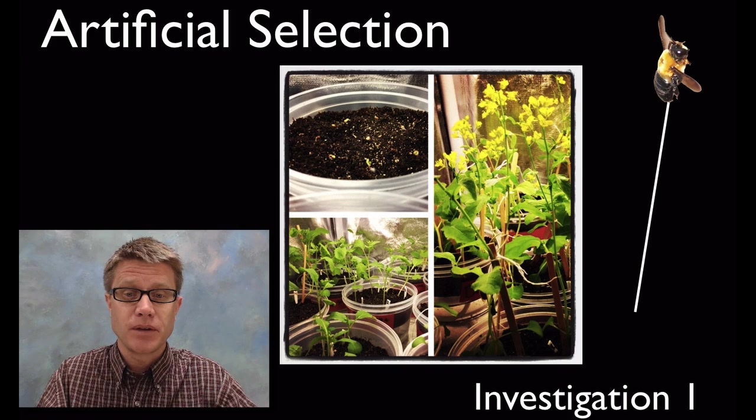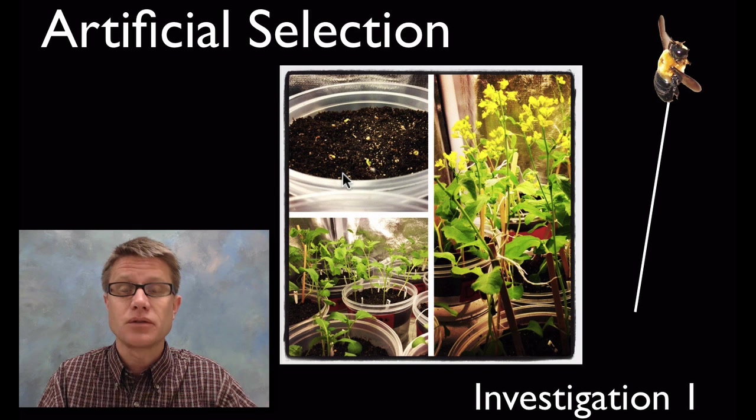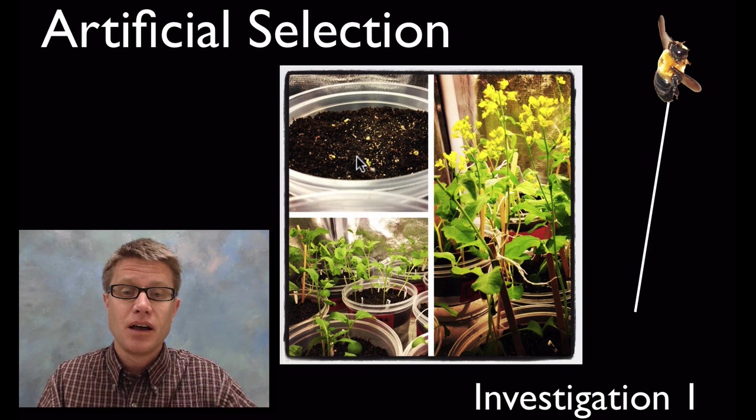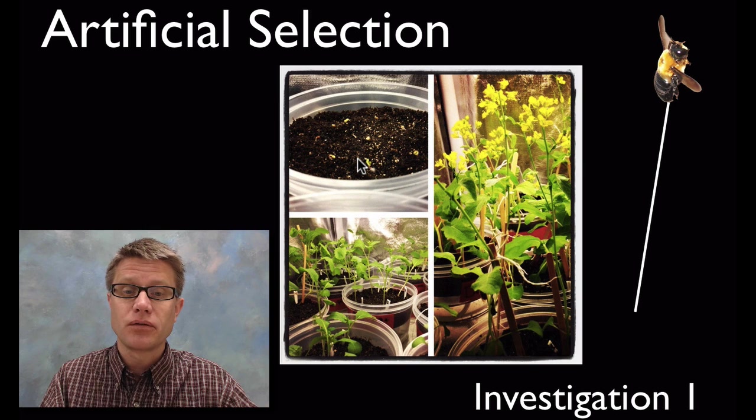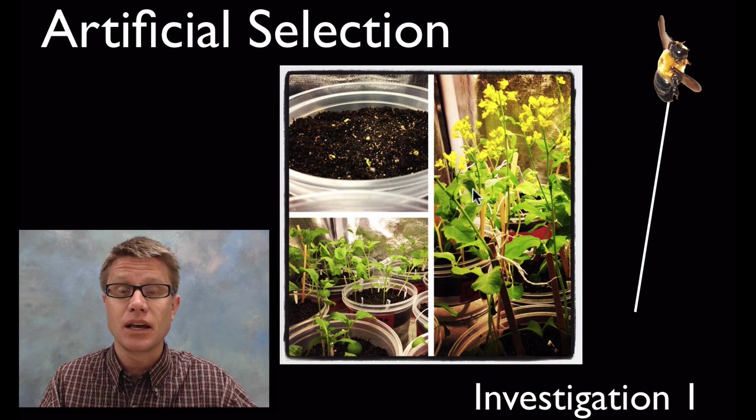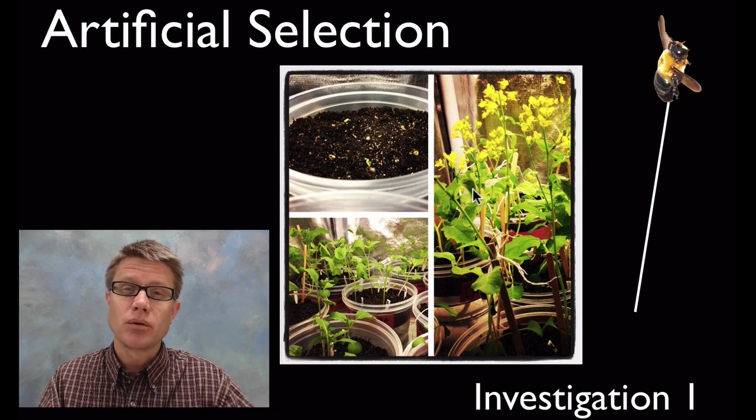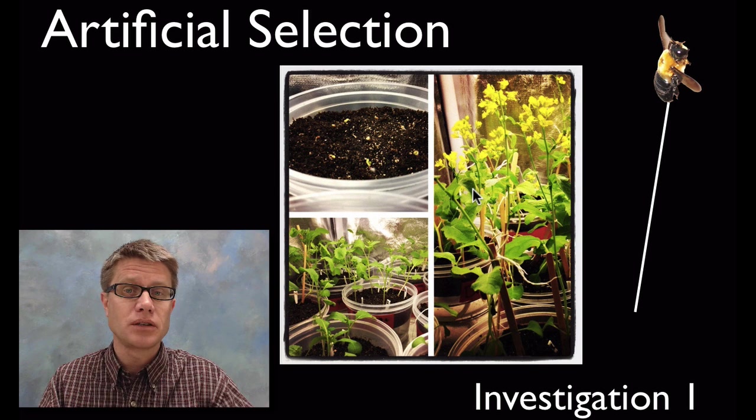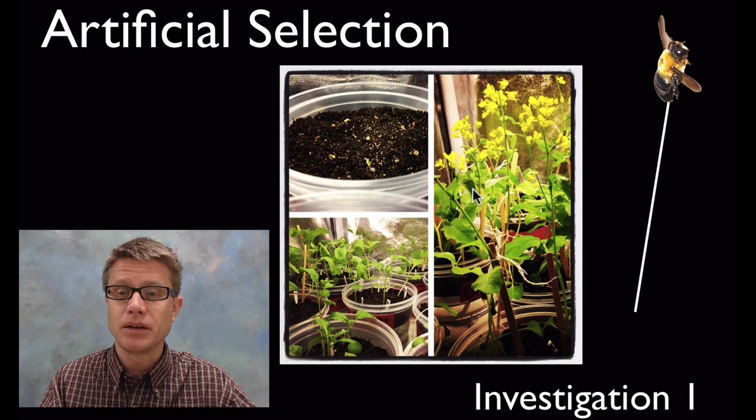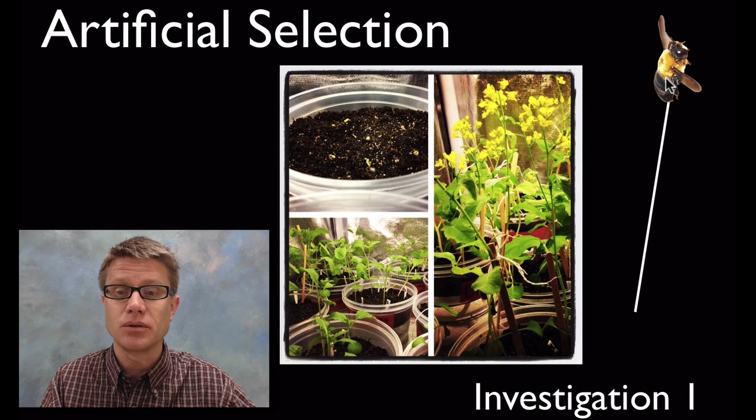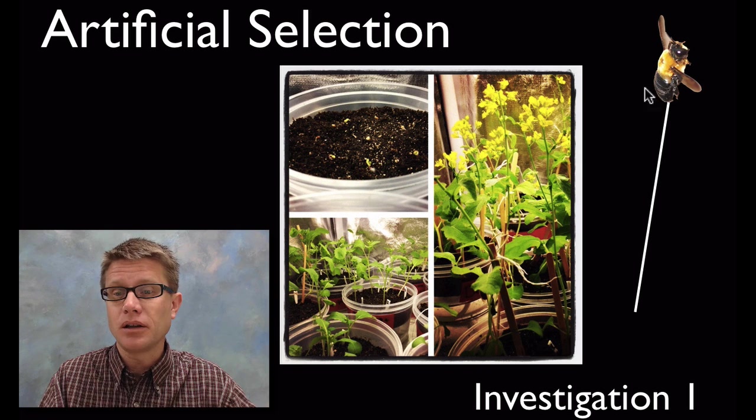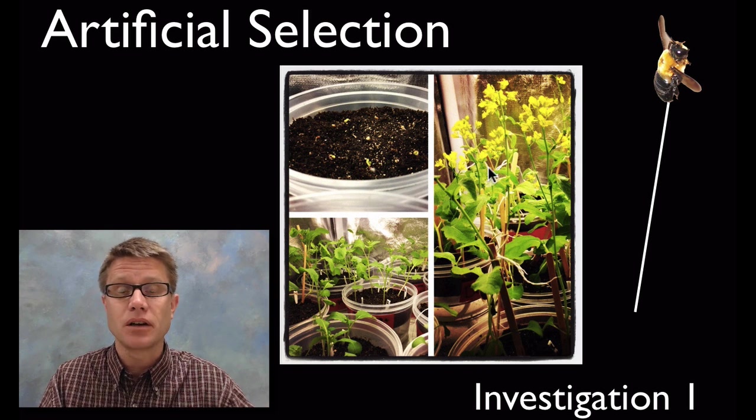This is on artificial selection. In this lab what I did in my class is we used fast plants. You plant these brassica plants that grow really fast. You can go from seed to new seeds again in less than a month. What we're doing is choosing which traits we want to pass on to the next generation, and you do that using what's called a bee stick, which is just a dead bee glued onto a stick. You can pollinate other flowers on other fast plants.